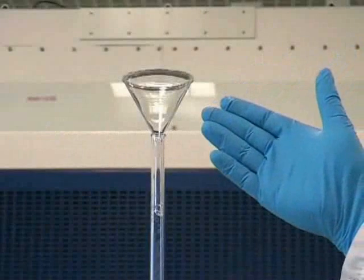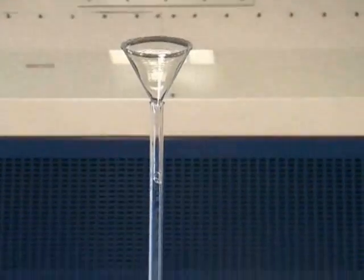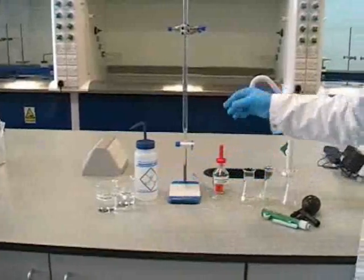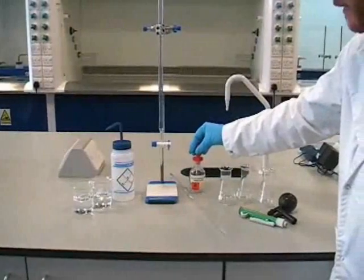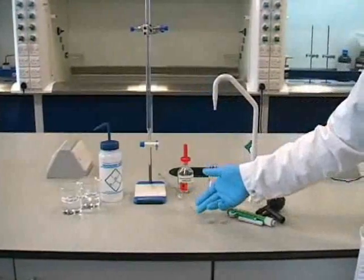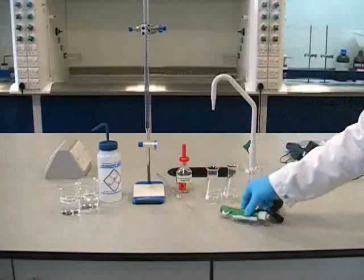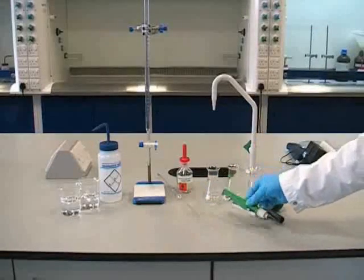Before filling a burette, we should make sure we've placed a small glass funnel in the top. We should also make sure we've got the rest of the equipment we need, including solutions, distilled water, a suitable indicator—in this case phenolphthalein—a 25ml volumetric pipette, three clean conical flasks, and a pipette filler. Two examples of these are shown on the screen.